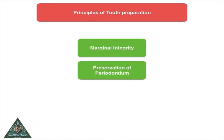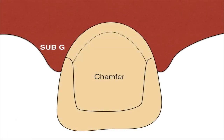Marginal integrity and preservation of periodontium go hand in hand. Marginal integrity is achieved by the choice of margins. For periodontium, you want to consider whether to have a supra-gingival or sub-gingival margin. When the restoration margin is below the level of the gingiva, it is called a sub-gingival margin, and the problem is it is very difficult to maintain and periodontal health may be compromised, though it is very aesthetic.